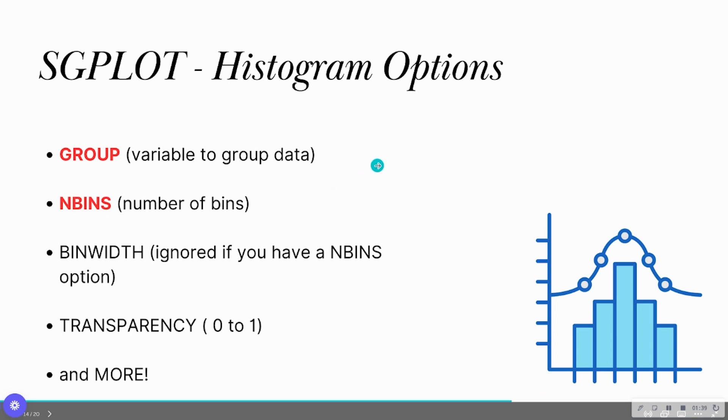So just like any other visual in SGPLOT, there are options. There are things that you can change about your histogram. You can group your histogram based off of another categorical variable. You can tell it the number of bins, and we're going to show how the visual changes based off of the number of bins.